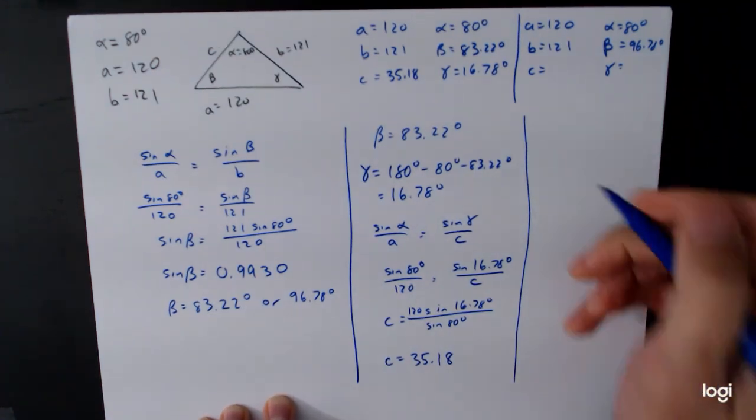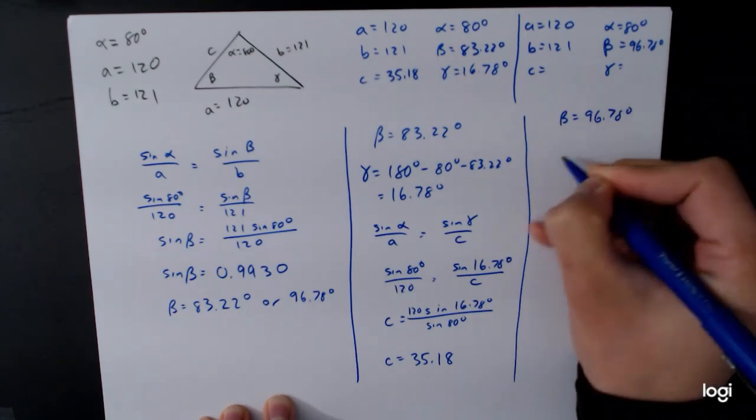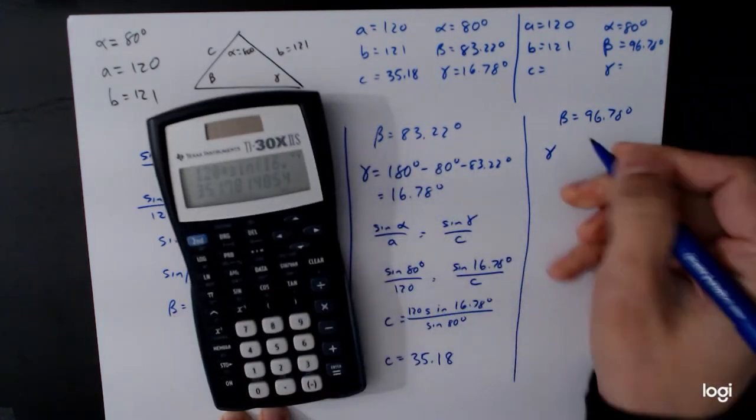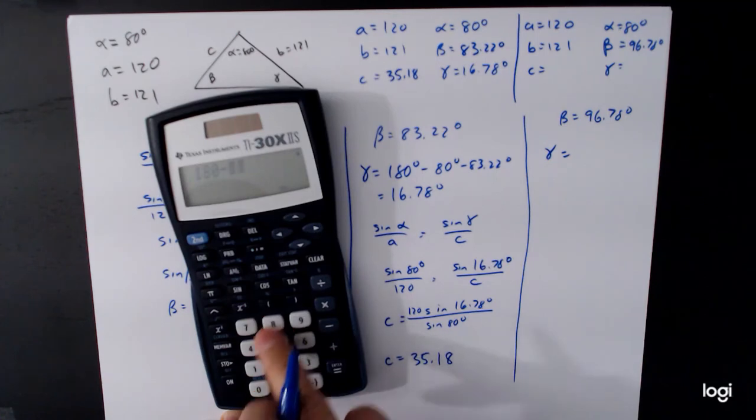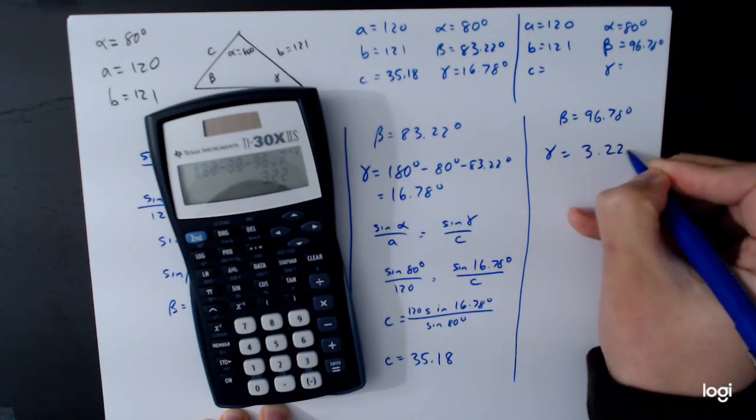Now we have to do the other problem. This time, beta is equal to 96.78 degrees. So gamma is 180 minus 80 minus 96.78 degrees, 3.22 degrees.